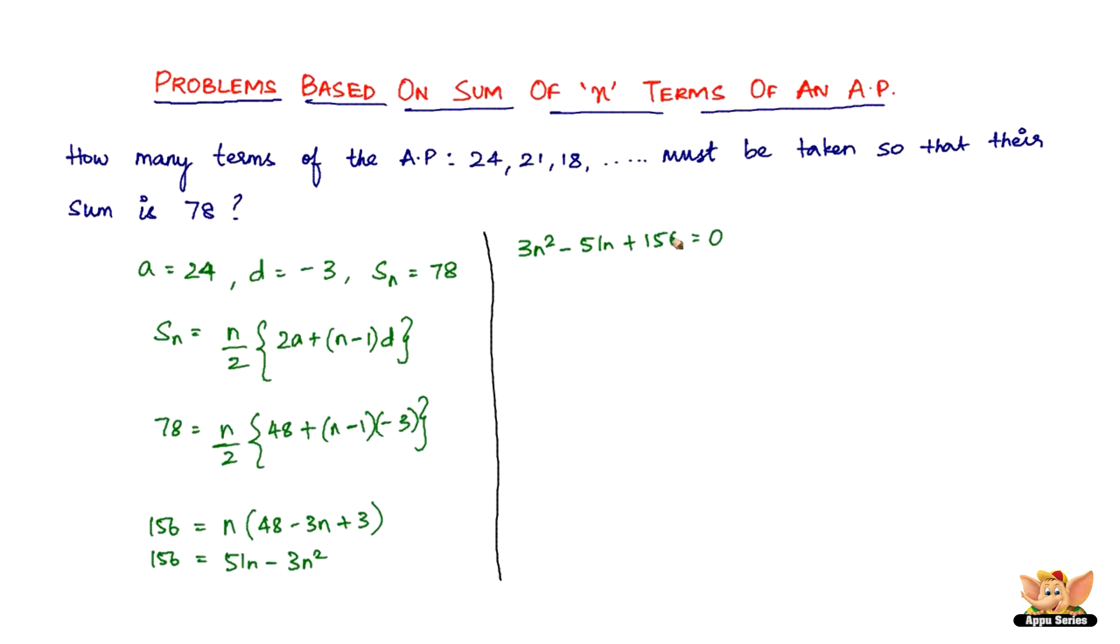We've got 3n squared. Let's rewrite this: it'll become 3n squared minus 51n plus 156 equals 0. So dividing throughout by 3, we get n squared minus 17n plus 52 equals 0. Now factorizing 52, we need to get it in such a way that the product is 52 and the difference is 17.